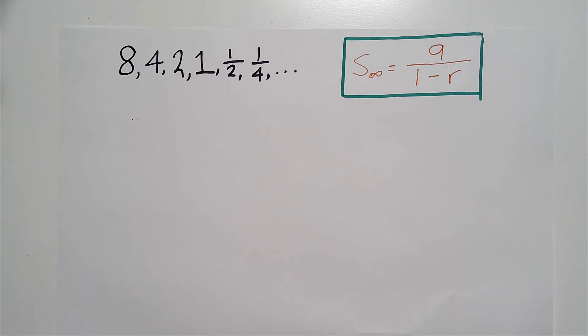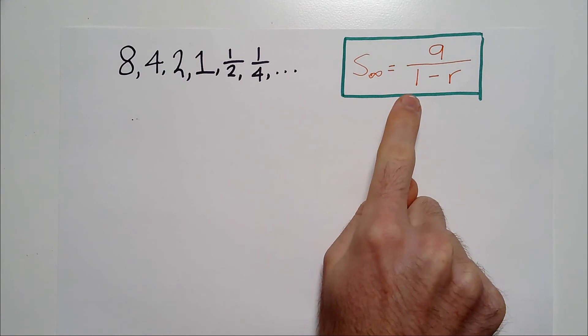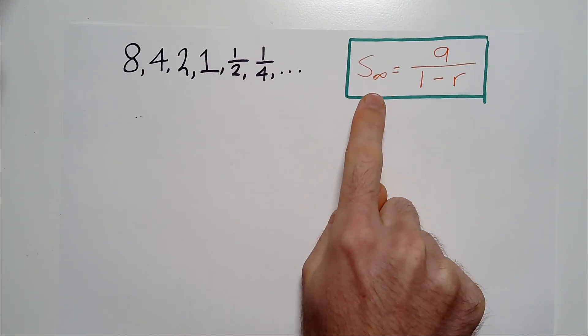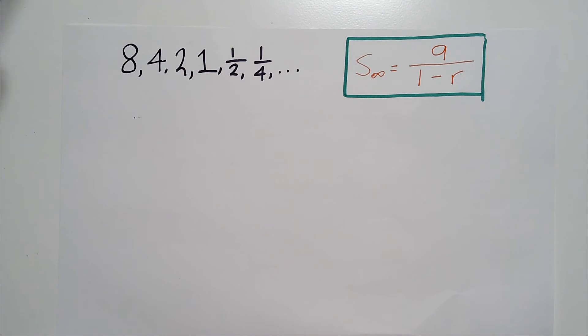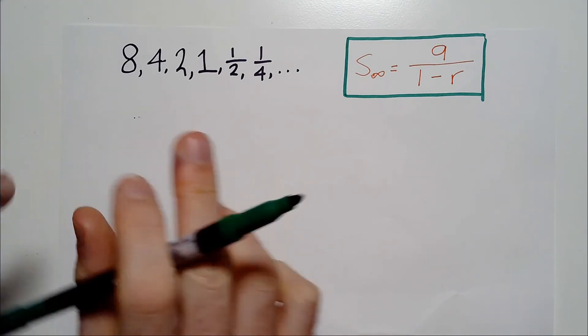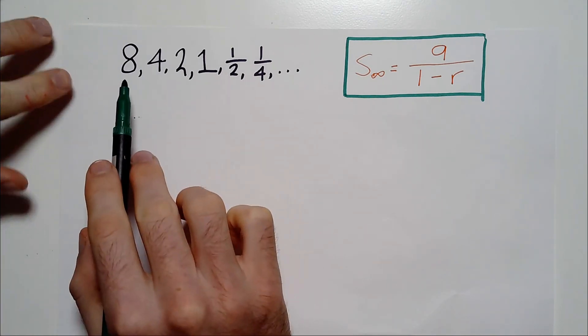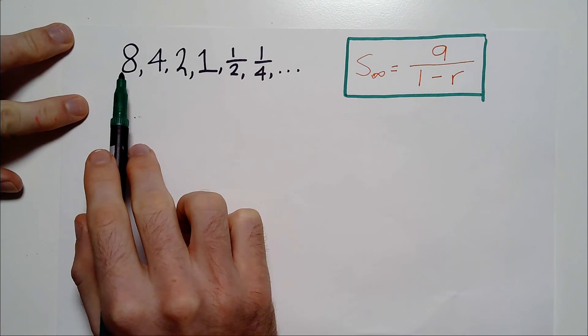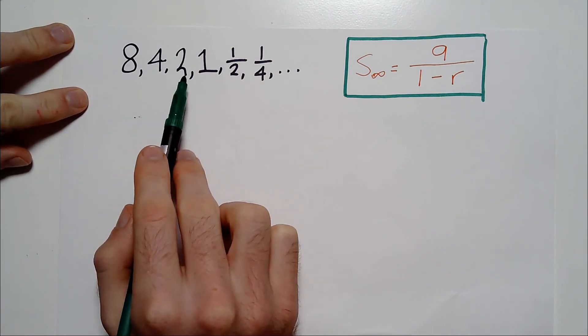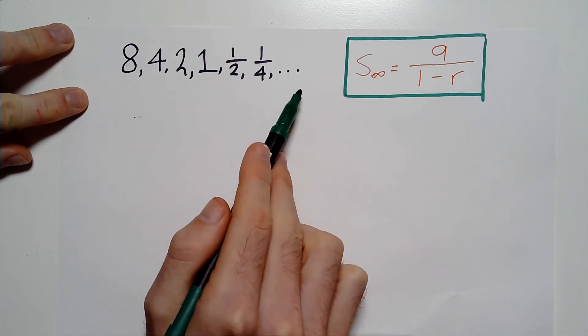So let's first of all establish the context in which the formula up here to the right, that is the formula for an infinite geometric progression, will be relevant for you. We're dealing with a situation where you have a pattern of numbers like here. I've used this example of the first number being 8, followed by 4, followed by 2, followed by 1, a half, a quarter, and so on.